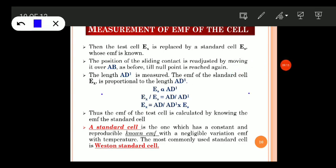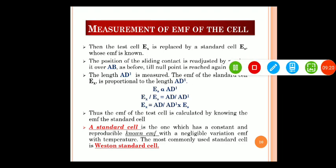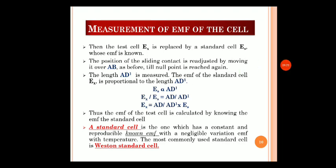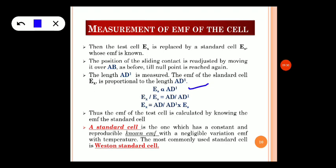Dividing the two proportionalities: E subscript X divided by E subscript S equals AD divided by AD'. Rearranging, E subscript X equals E subscript S multiplied by (AD / AD'). Since the EMF of the standard cell is known, and we can measure the null point distances AD and AD' through the potentiometer, we can substitute the values to obtain the EMF of the test cell E subscript X. Thus the EMF of the test cell is calculated by knowing the EMF of the standard cell.